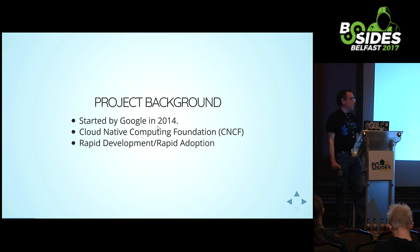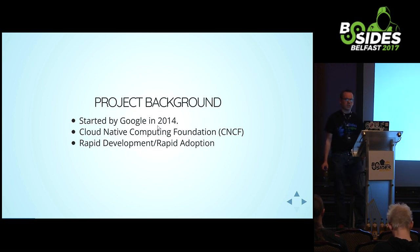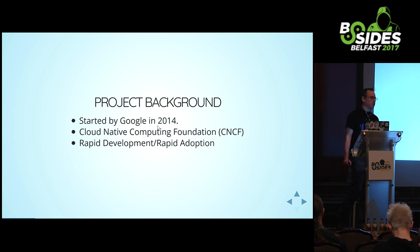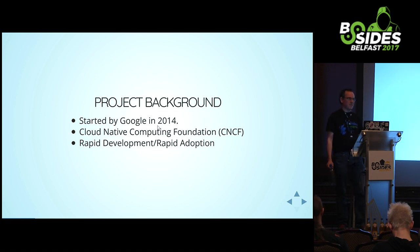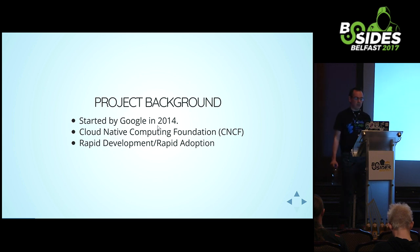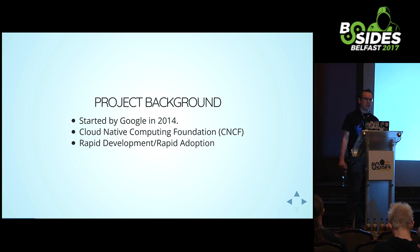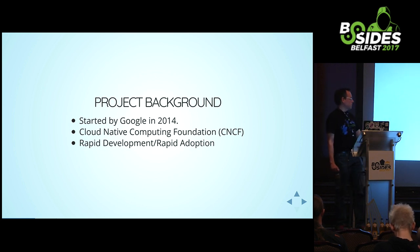Where did it come from? It came out of Google in 2014. Google had an internal project called Borg, and some Google engineers wanted an open source version, so they came up with Kubernetes. It doesn't share any code with Borg but is based on similar concepts. It's managed by the Cloud Native Computing Foundation - a conglomeration of pretty much all the big players in cloud: Amazon, Google, Microsoft, Red Hat, IBM - and Kubernetes is their flagship project.